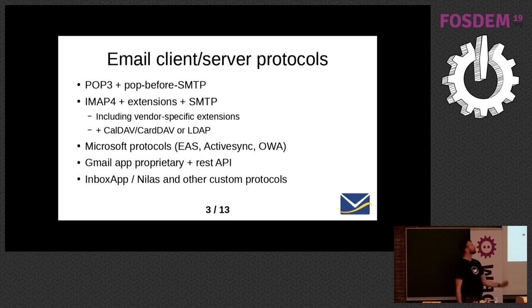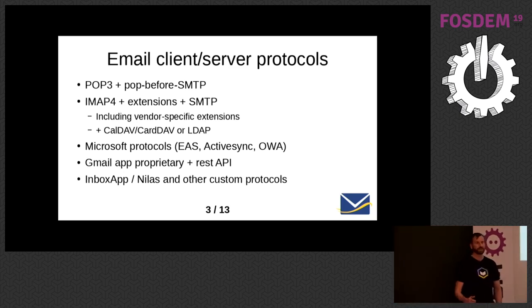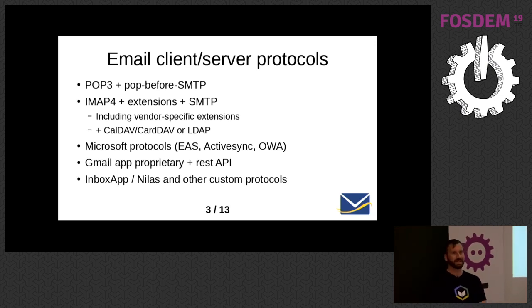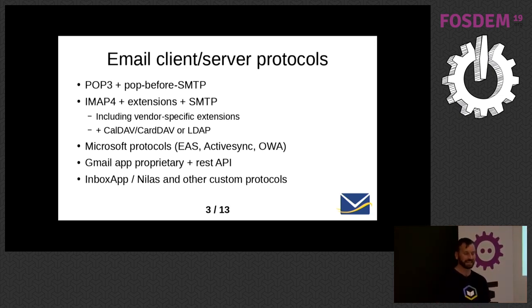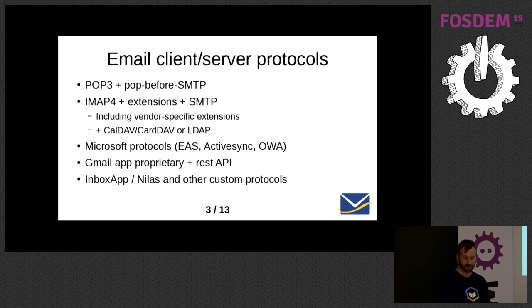This is what we have now. Not many people are using POP3 anymore. For open standards, it's pretty much IMAP plus extensions, including vendor-specific extensions, CalDAV, LDAP, and a bunch of other standards for things that are not email. Microsoft have three protocols of their very own. Gmail have their own proprietary protocol. There's a bunch of custom protocols for accessing email because IMAP is kind of miserable to use in today's world.